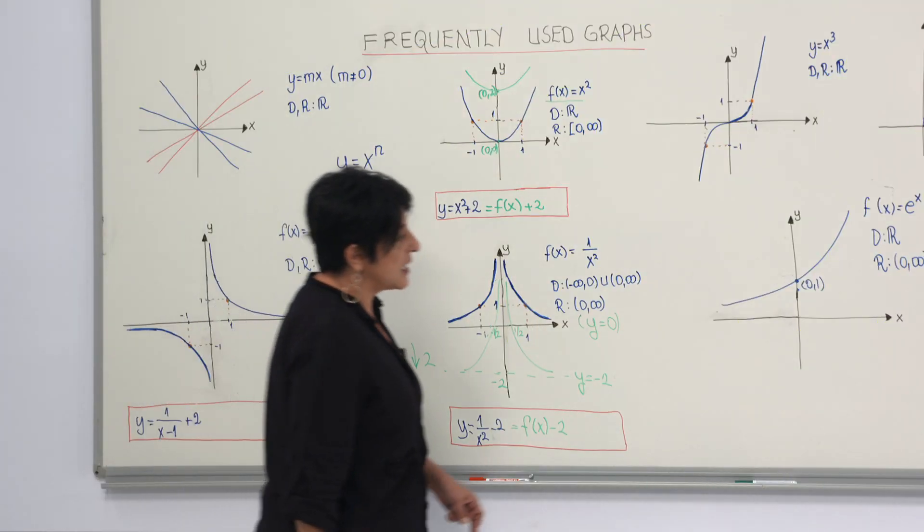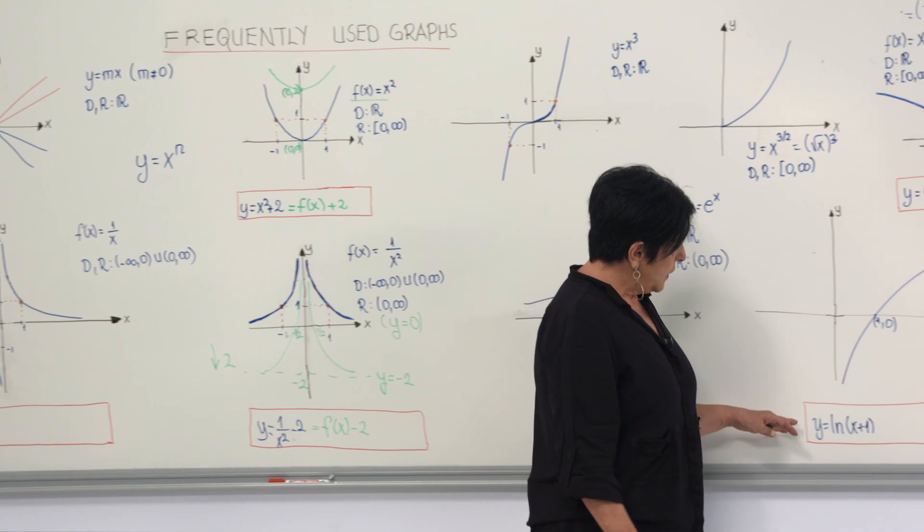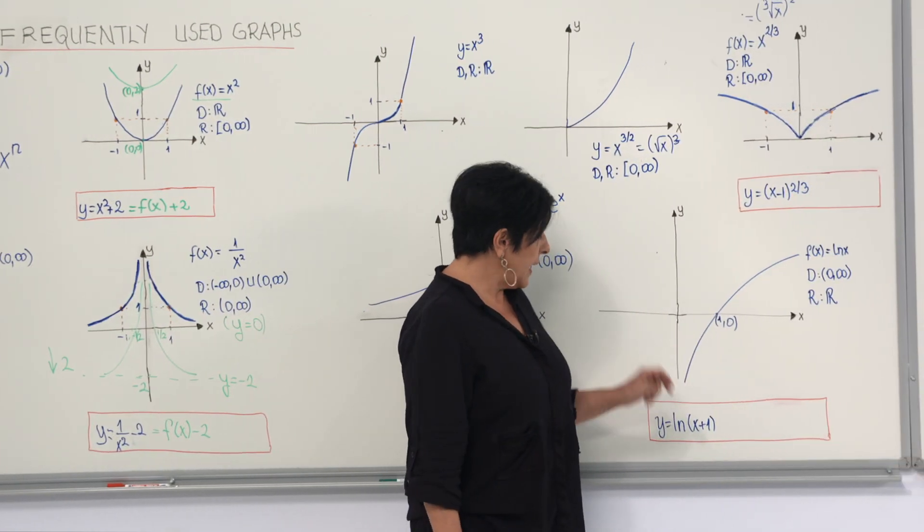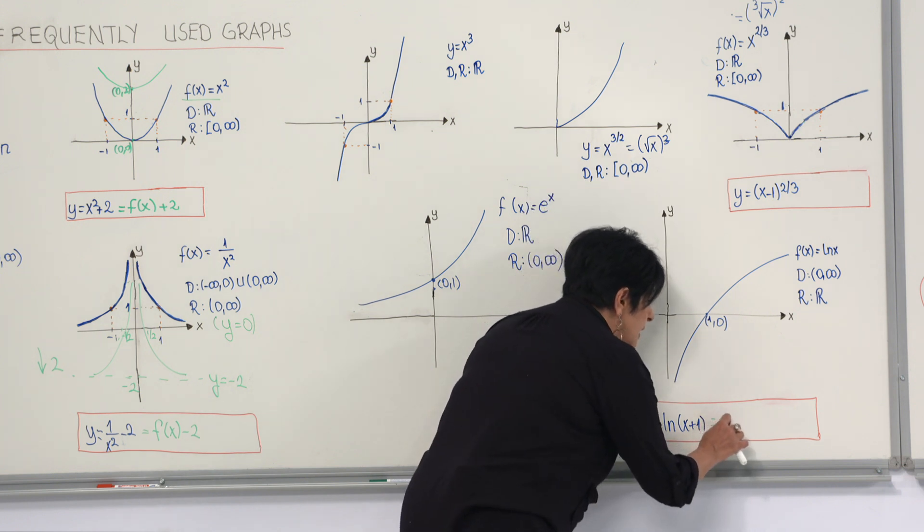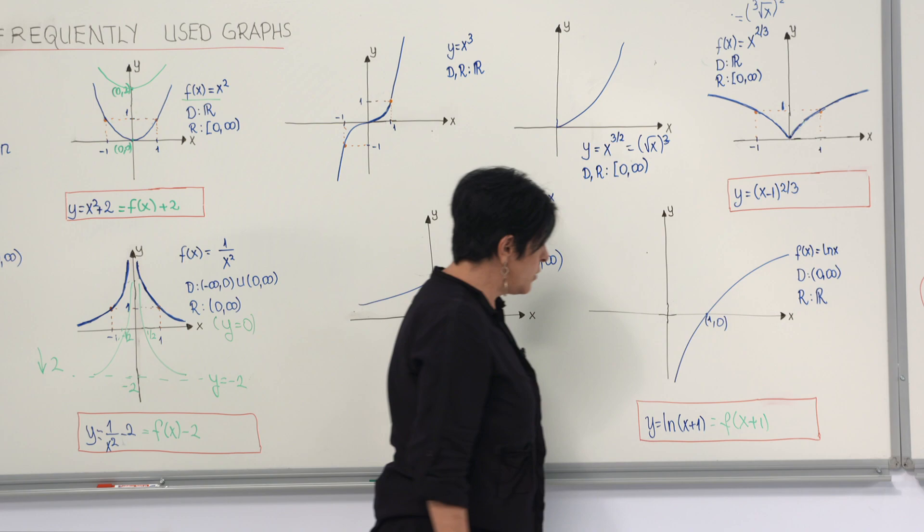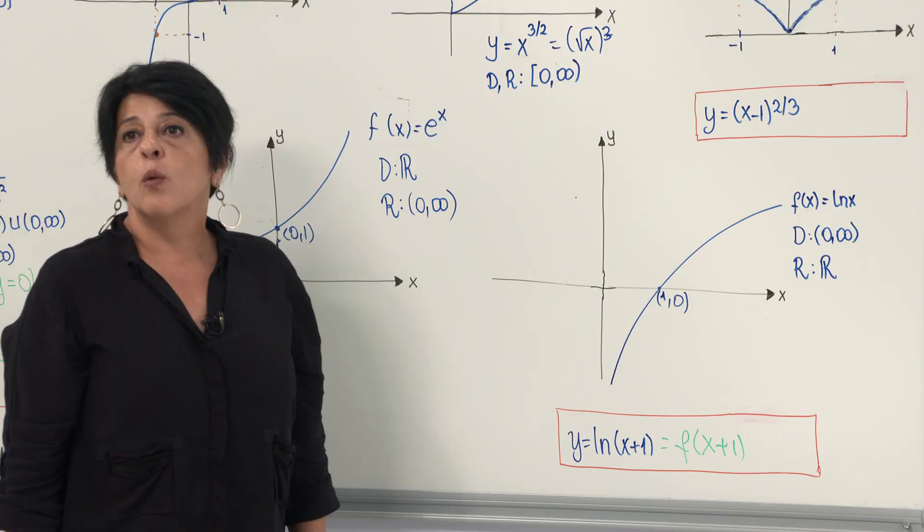Now, let's look at this example: y equals ln(x plus 1). Now, let's call f(x) to be ln(x). Then this one can be written as f(x plus 1), left one unit.